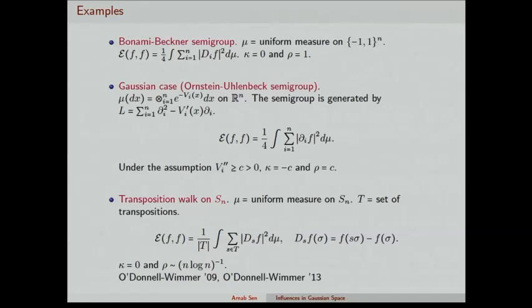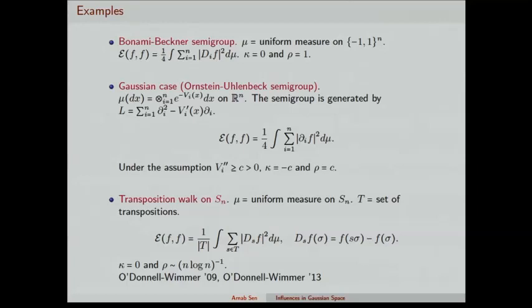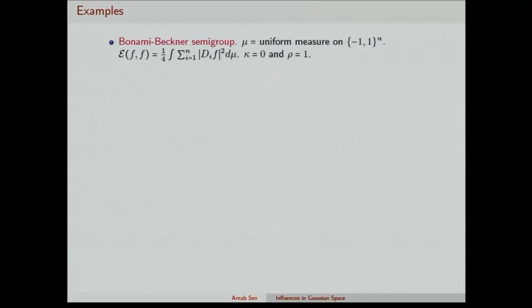You can go beyond product measures. For a non-product measure example, take the transposition walk on S_n — the set of permutations on n alphabets — where μ is the uniform measure on S_n. In this case the operators Γ_i are indexed by the set of transpositions, and they are the discrete derivative along the direction of the transposition. This result is already present in the paper of O'Donnell and Wimmer from 2009.